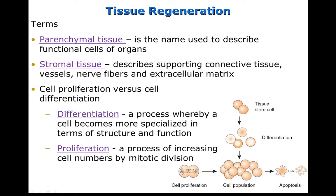Before we move on, we need to define some terms. Body organs and tissue are composed of two different types of tissues. Parenchymal tissue describes the functional cells of the organs, like hepatocytes and the cells in the renal tubules. Stromal tissue are the supporting connective tissue, including vessels, nerve fibers, and the extracellular matrix.